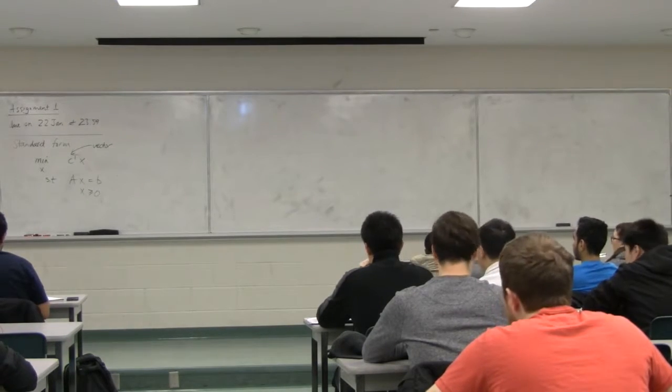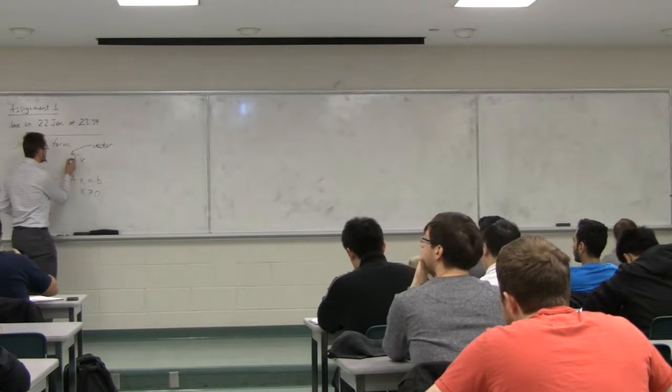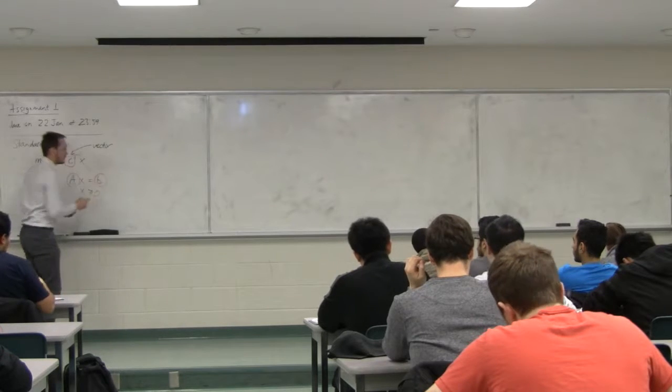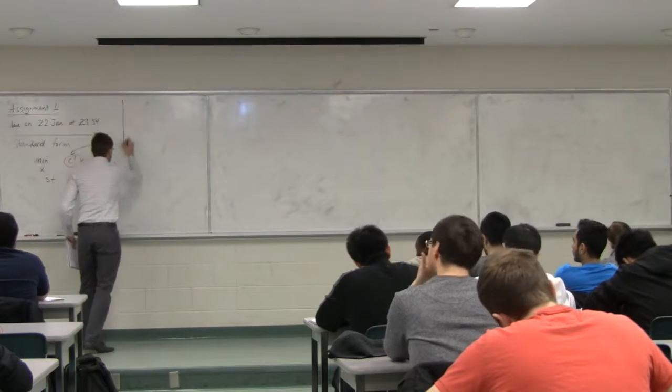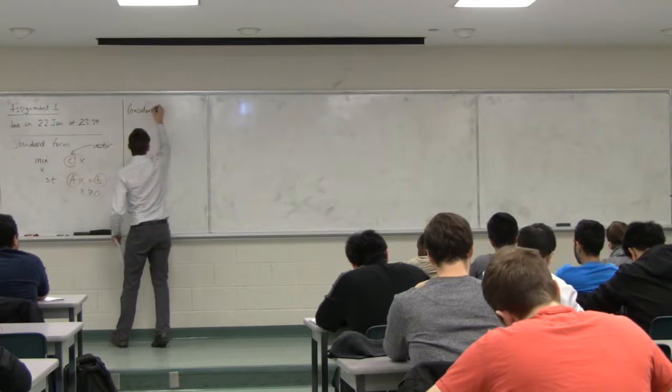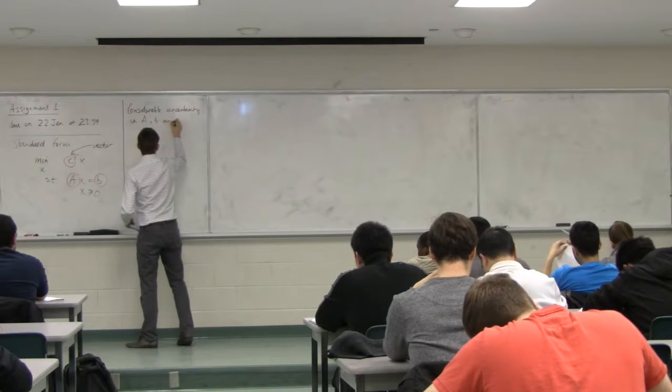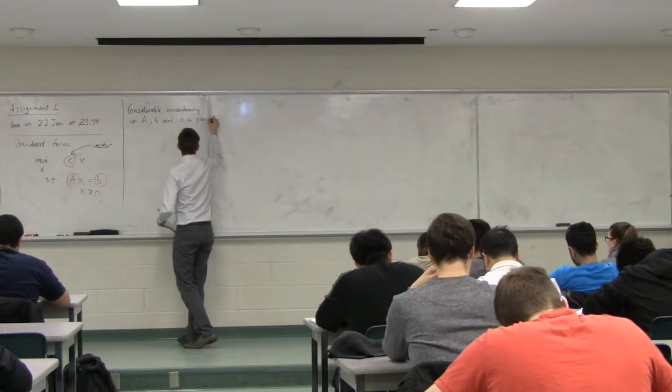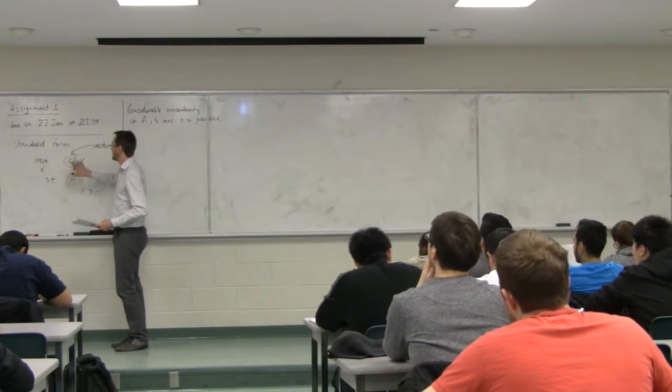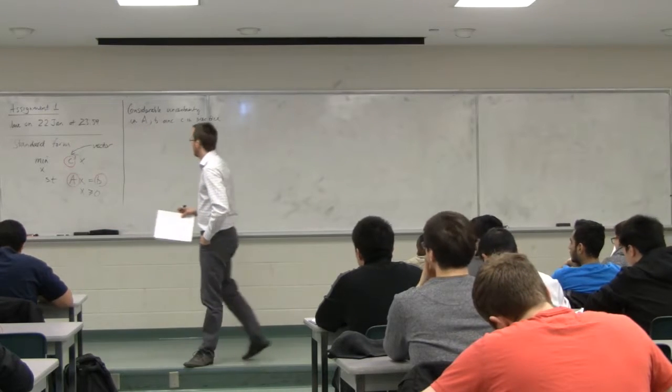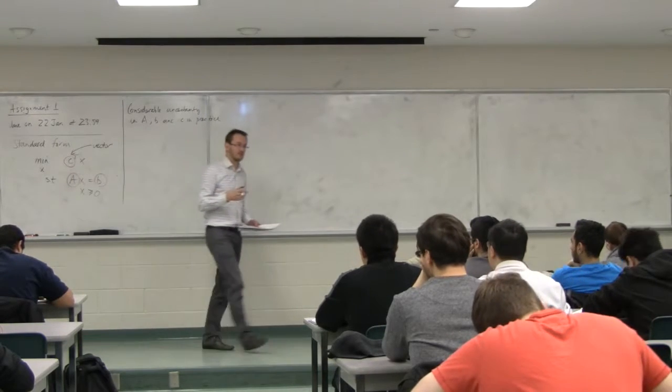That's where I want to start this class, that's standard form. Our goal in this class today is to understand what happens at the optimum. There is considerable uncertainty in A, B, and C in practice. It might seem like we know those numbers in the table very precisely that form the coefficients.